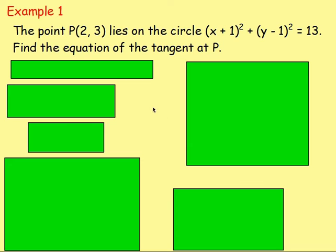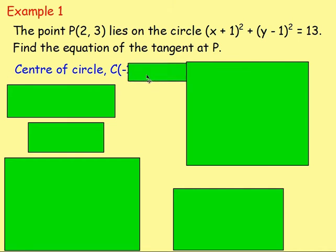Example one: the point P(2, 3) lies on the circle (x + 1)² + (y − 1)² = 13. Find the equation of the tangent at P. You may wish to sketch this. The first thing to do is write down the centre of the circle. A circle in this form has a centre — in this case, negative 1, 1.